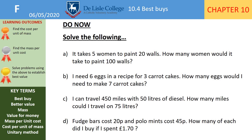Hello, welcome to this GCSE foundation level lesson looking at best buys. This is section 10.4. This lesson builds upon our learning on direct proportion, which was section 10.3. Pause the video, think about your working out and have a go at the following.